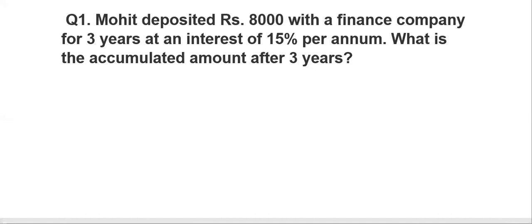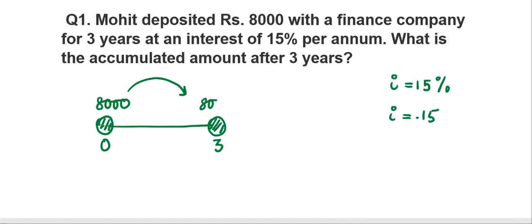This is the first problem. Mohit deposited Rs. 8000 with a finance company for 3 years at an interest of 15% per annum. What is the accumulated amount after 3 years? So let me write. This is zero. Number line is very important. Make it sure to draw a number line each time. 3 years here. Amount 8000. i is given 15%. So I will write i equals 0.15. And then here the accumulated value will be 8000 times (1 plus 3i).